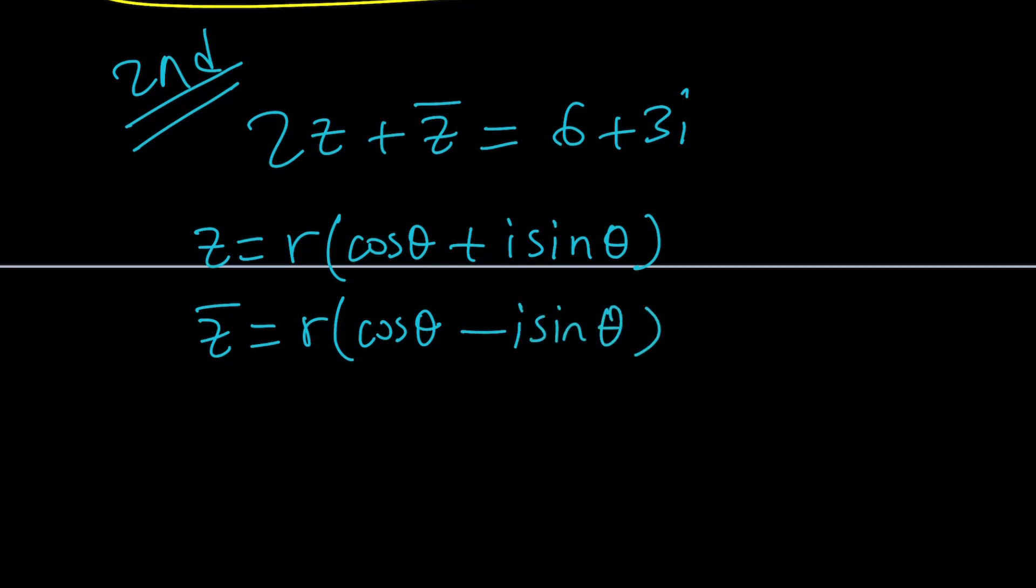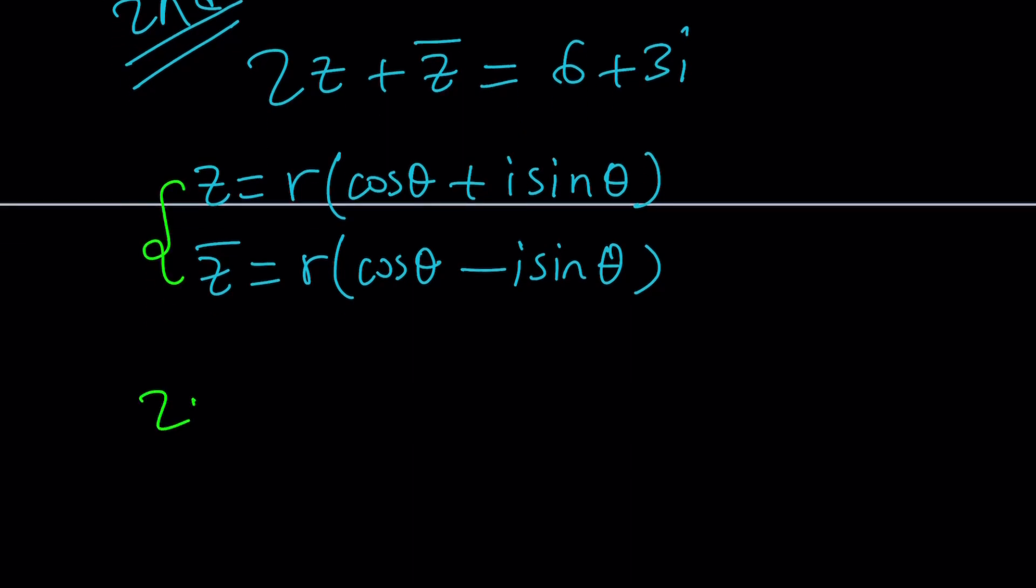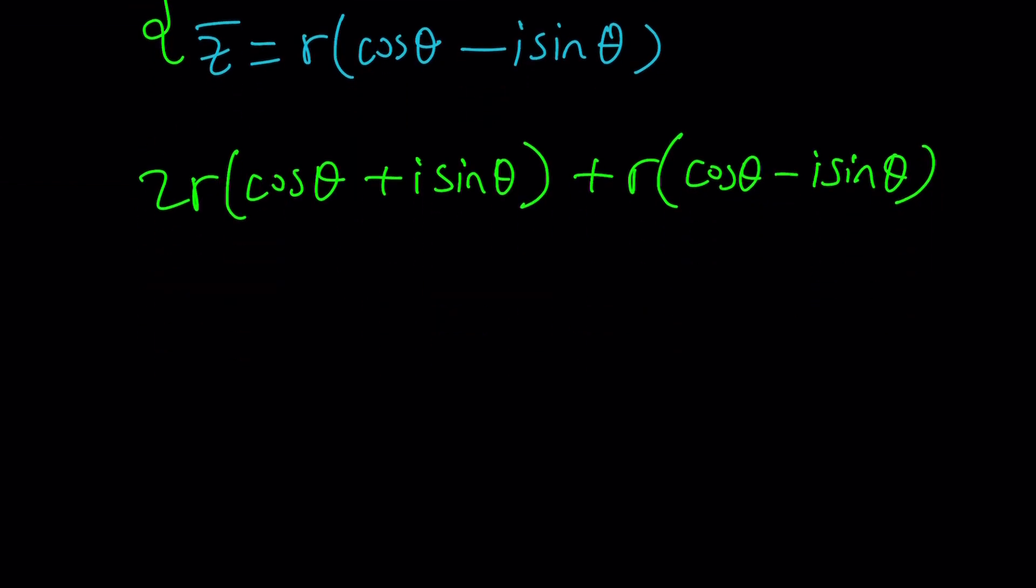Let's go ahead and plug these into our equation and we get 2 times r times cosine theta plus i sine theta plus r times cosine theta minus i sine theta. Let's go ahead and simplify this and then we'll set it equal to 6 plus 3i.